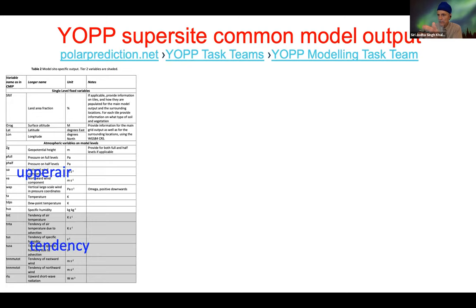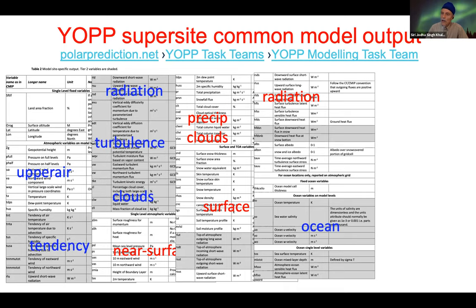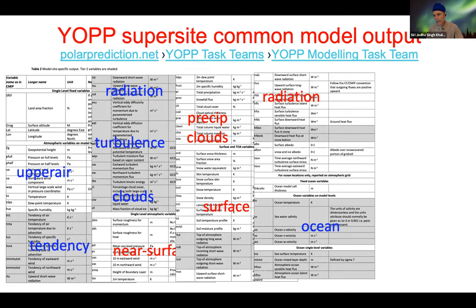We went on to merge and align the model output at observatory locations, focusing on upper air tendency, radiation, near-surface variables, ocean variables, etc. This is a complete list of outputs that are requested or suggested from each of the modeling centers.